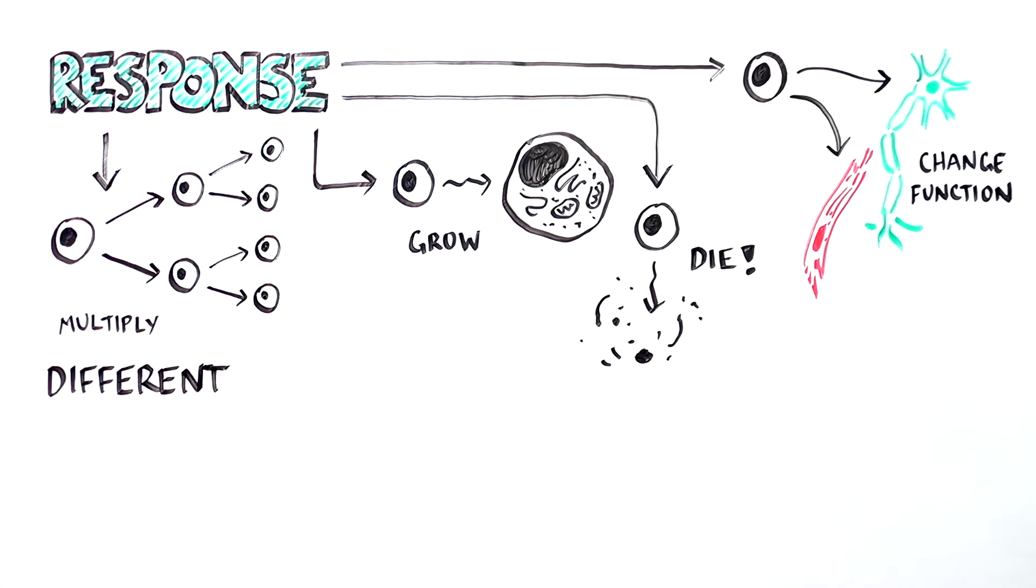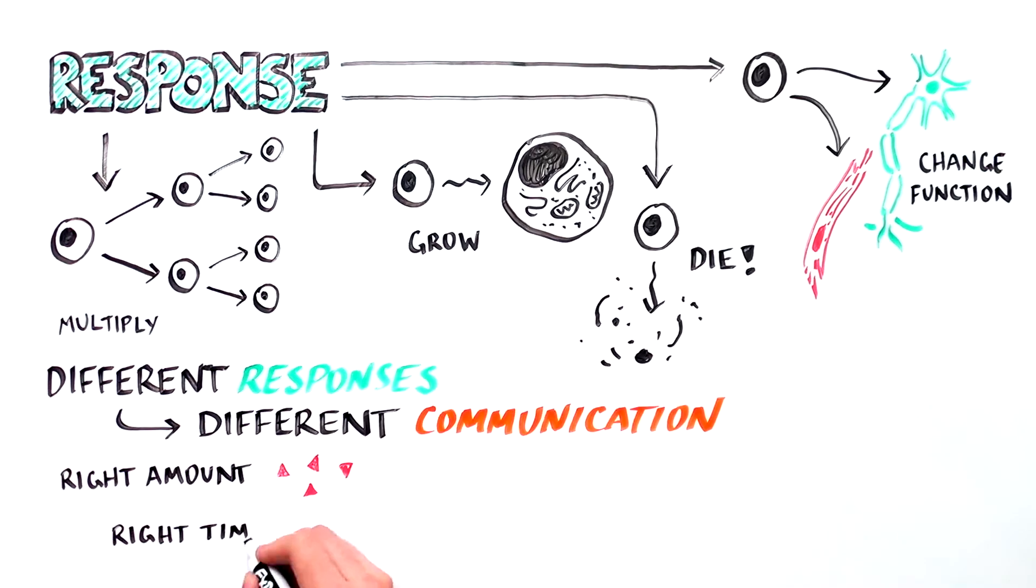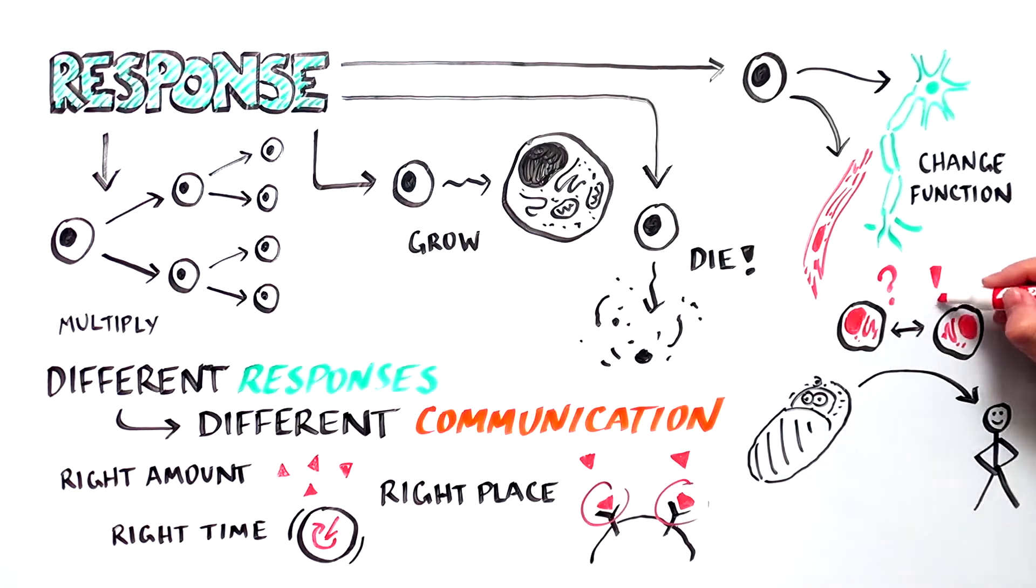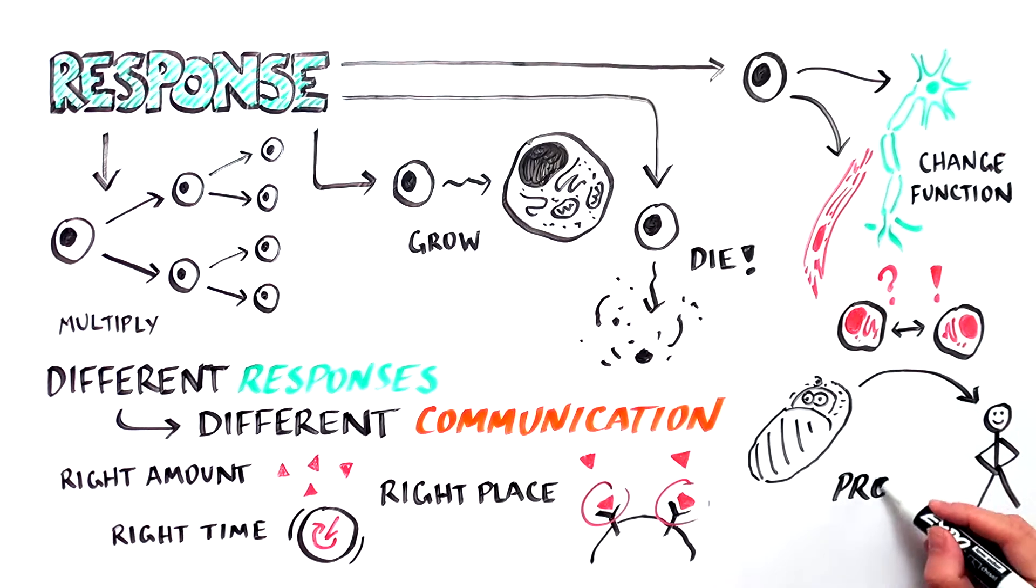As you can see, the responses can be very different, so it's really important that cells communicate just the right amount at the right time and the right place. In other words, cell communication in our bodies has to be well controlled for babies to develop normally and for our bodies to work properly, such as during wound healing, heart development, growth and learning.